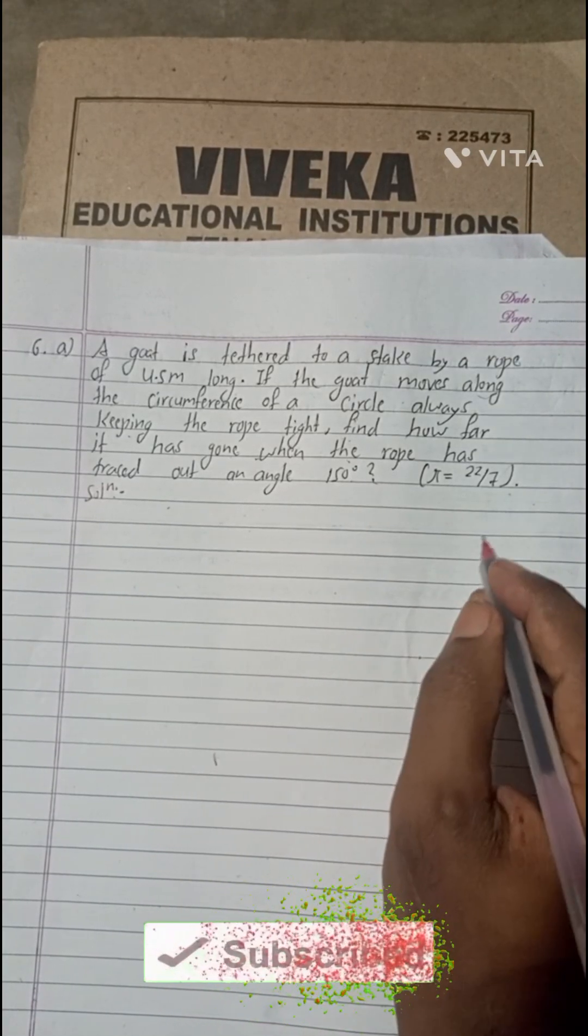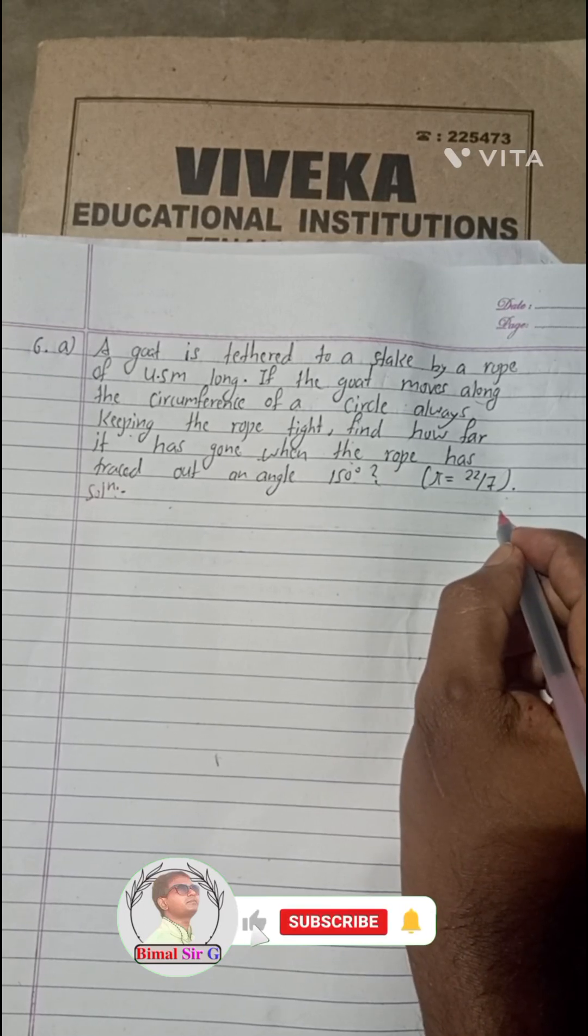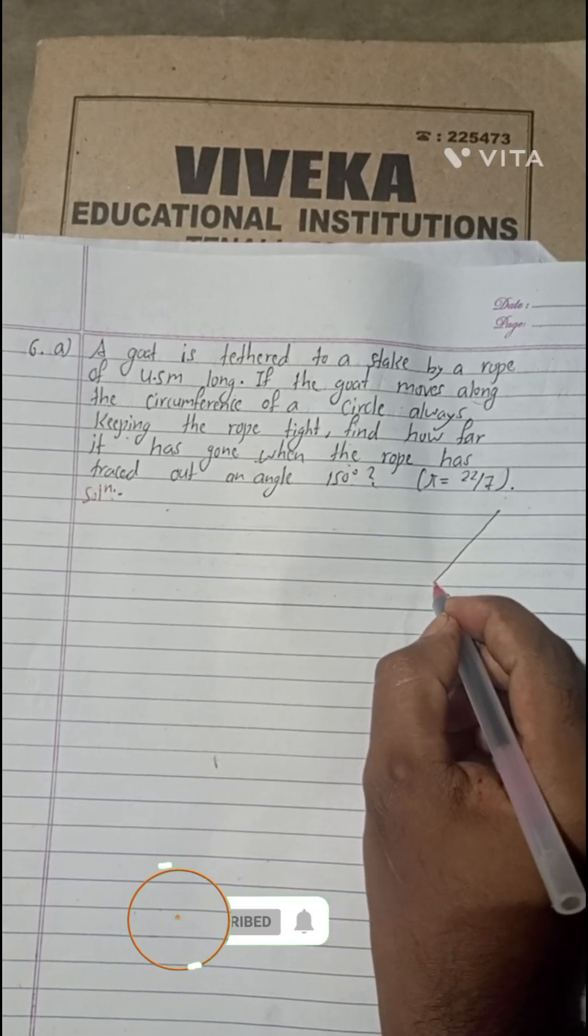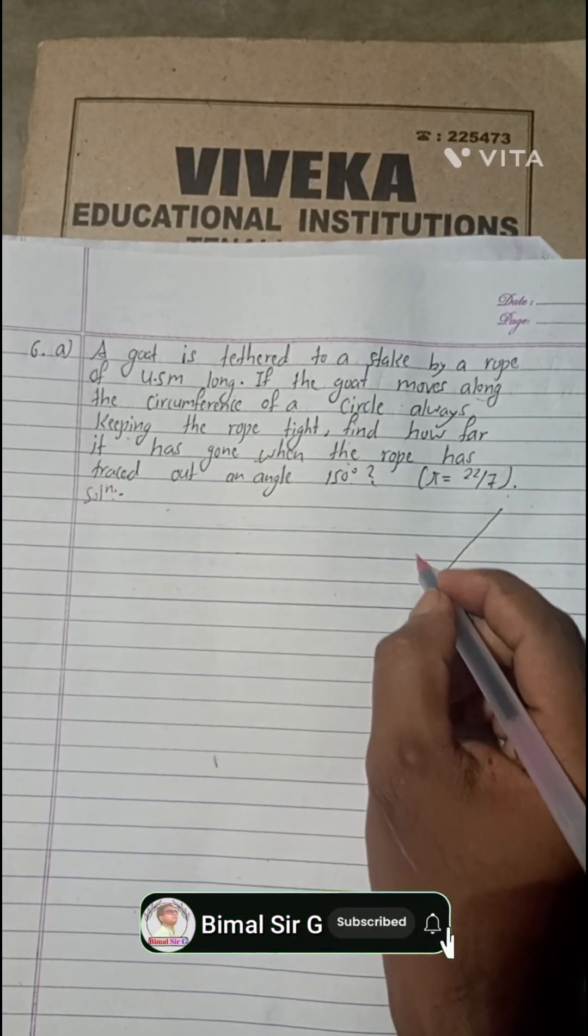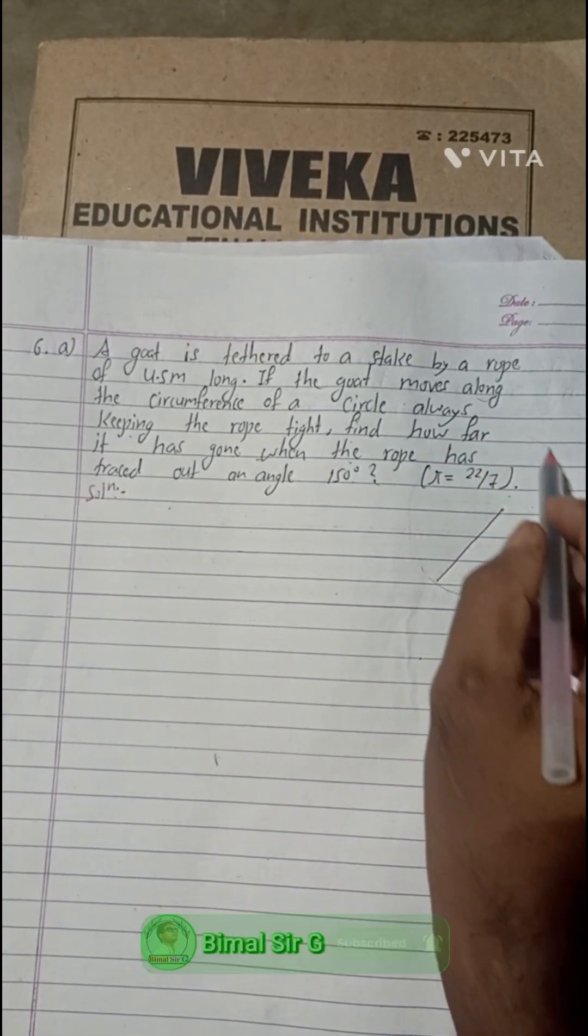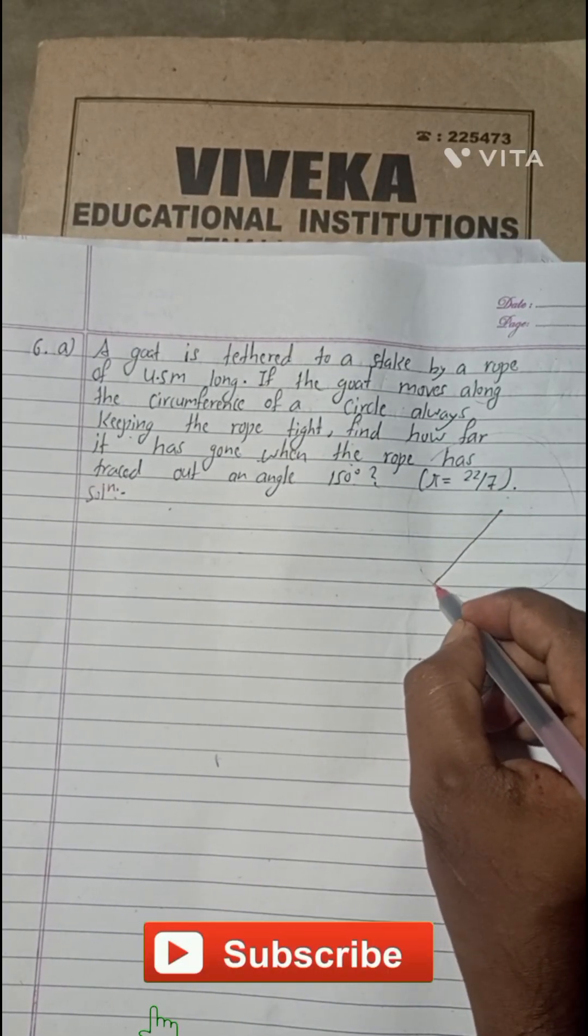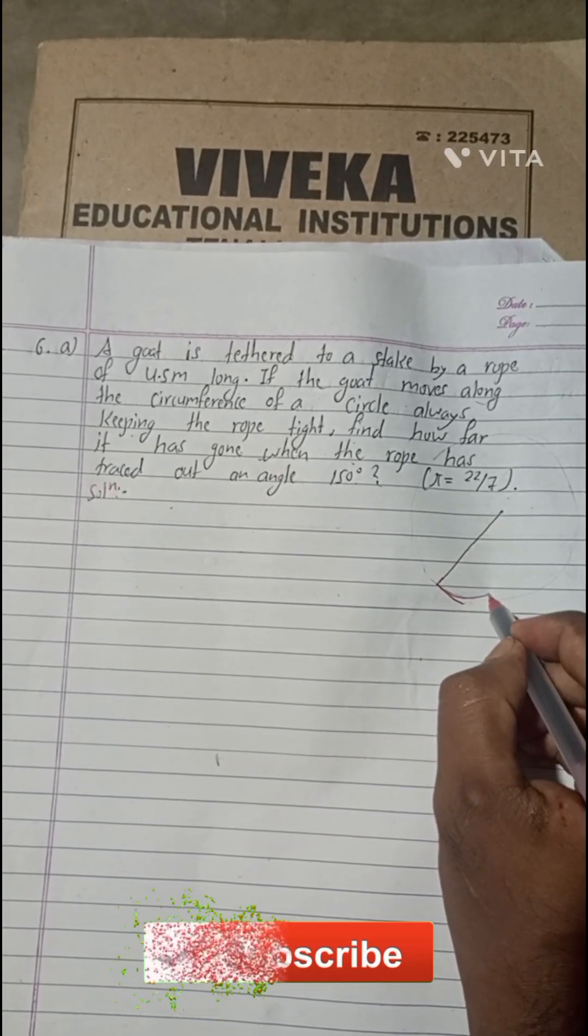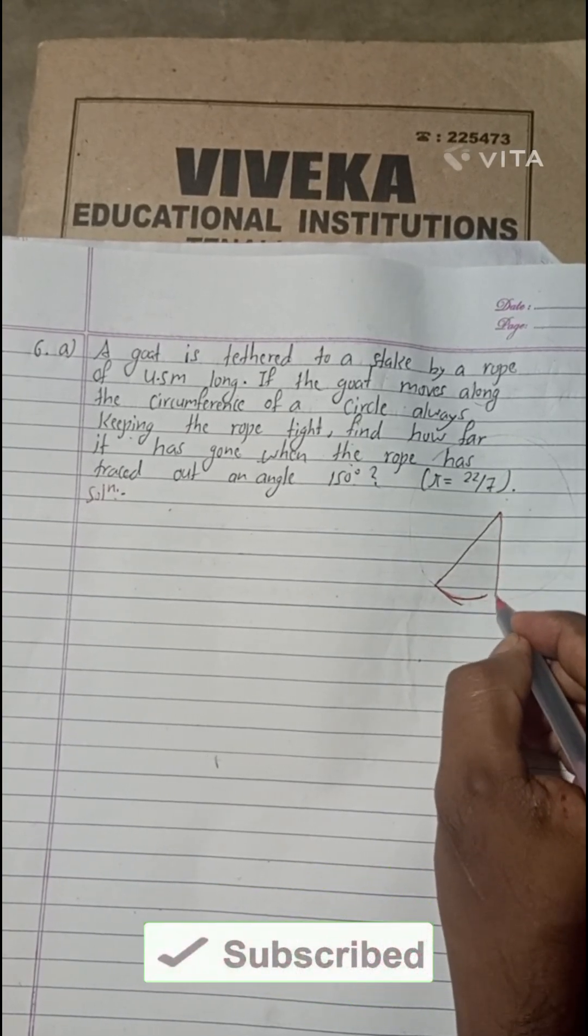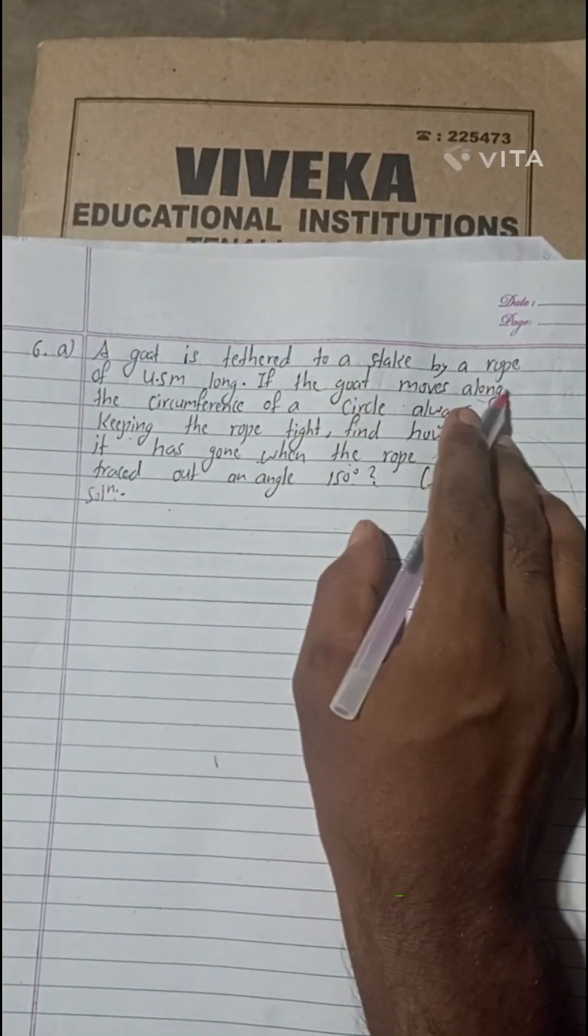That means one goat is tied here, tethered here. The rope, suppose this is our rope and goat is here, then goat will try to move this way making it a circular path. Suppose if the goat moves this way, then this will be the arc length. And when we join this, this length will be equal to the radius of the circle only.